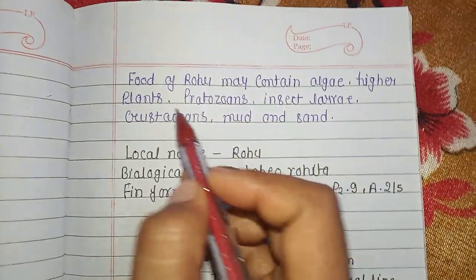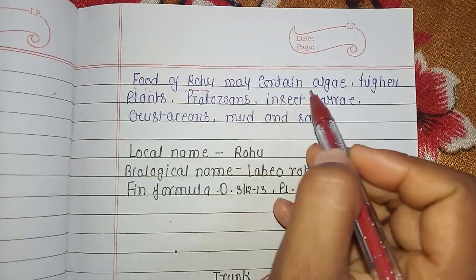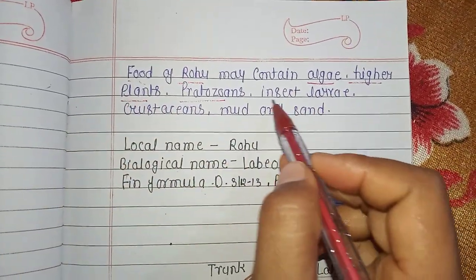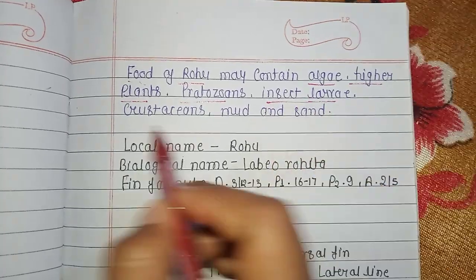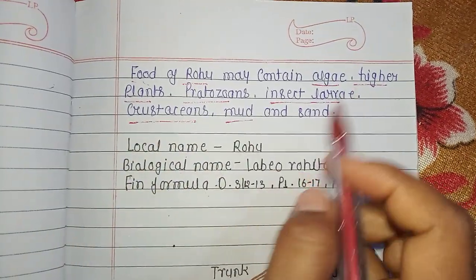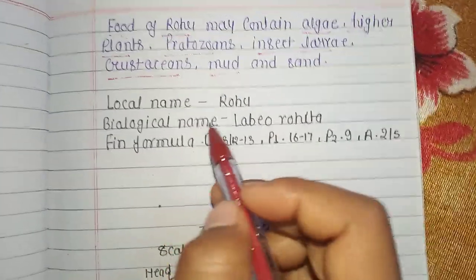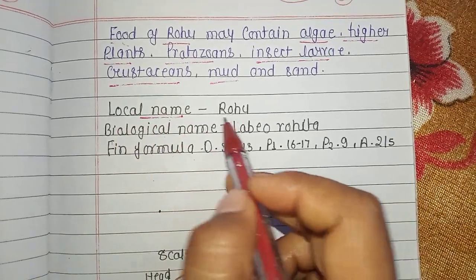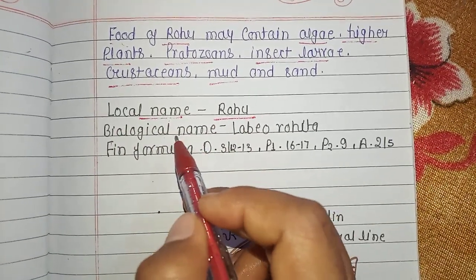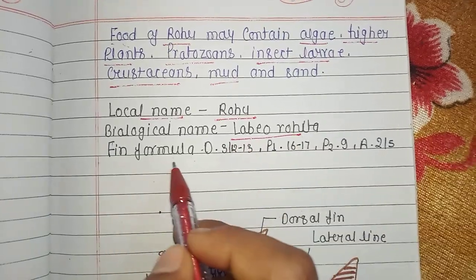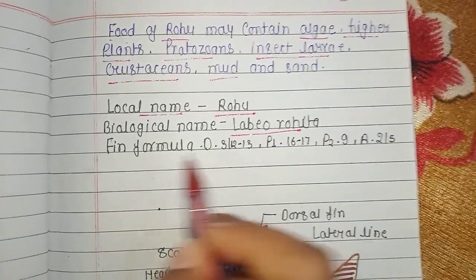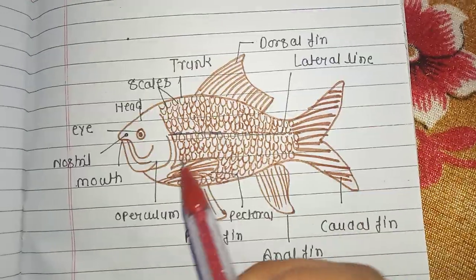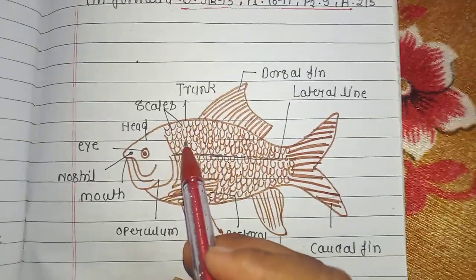The food of Rohu may contain algae, higher plants, protozoans, insect larvae, crustaceans, and much more. The local name of Labio rohita is Rehu or Rohu, and the biological name is Labio rohita. Here is the fin formula of Labio rohita.